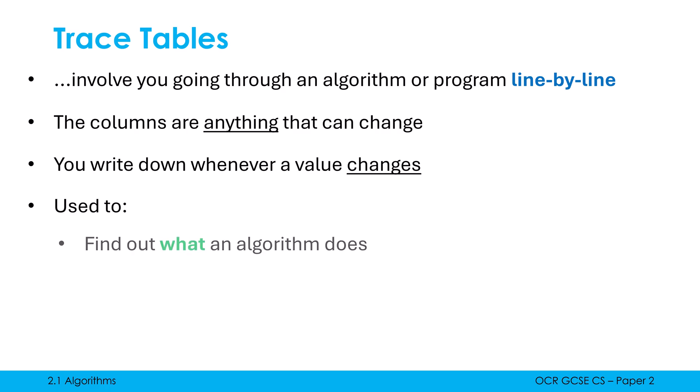The reason we use trace tables is we want to find out what an algorithm does — that's why they might put it in paper two, because a follow-up question might ask what the code actually does. Code can be confusing, but actually tracing it yourself makes it easier to understand. In real life, you might use a trace table when you have a tough logic error you can't understand — manually going through the code line by line can help you spot where it first starts going wrong.